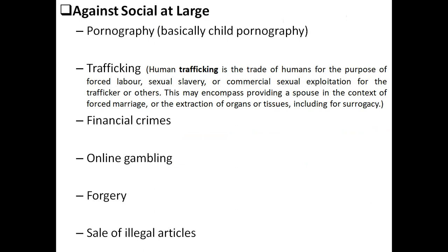Against society at large: pornography is also a kind of cybercrime, basically related to child pornography. Trafficking — human trafficking — is the trade of humans for the purpose of forced labor, sexual slavery, and commercial sexual exploitation for the trafficker or others. This may encompass providing a spouse in the context of forced marriage. Forced marriage is also a type of cybercrime, as is extortion of organs or tissue including surrogacy. Financial crime is also a cybercrime.